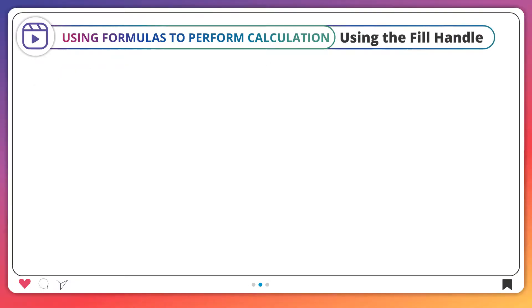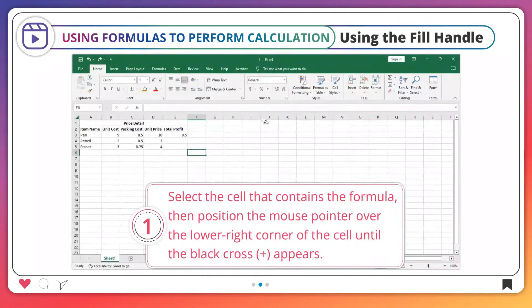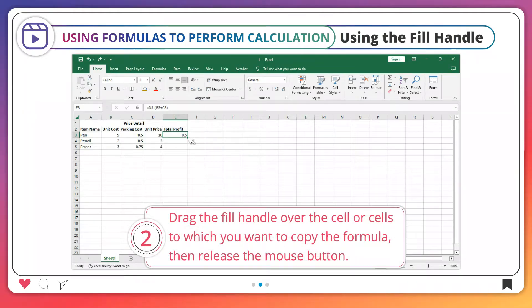Using the fill handle. Step 1: Select the cell that contains the formula. Then position the mouse pointer over the lower right corner of the cell until the black cross appears. Step 2: Drag the fill handle over the cell or cells to which you want to copy the formula, then release the mouse button.